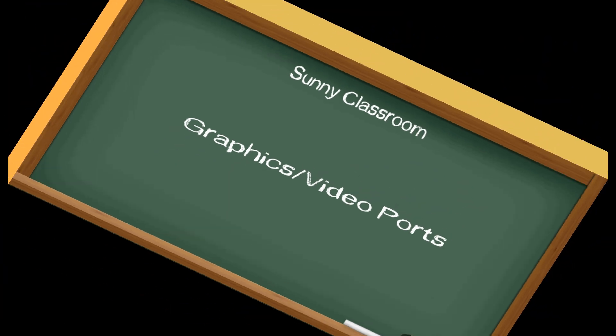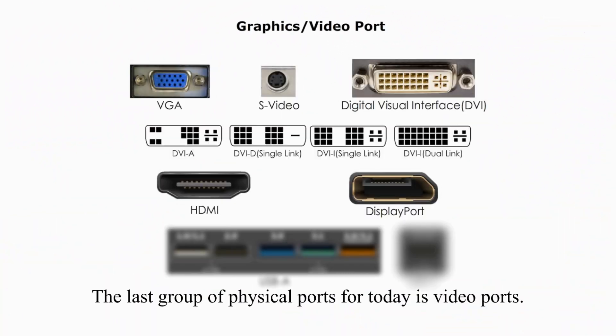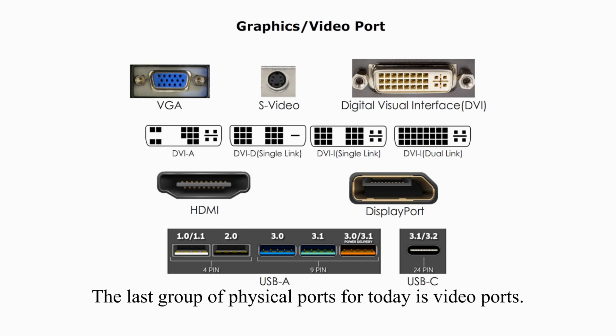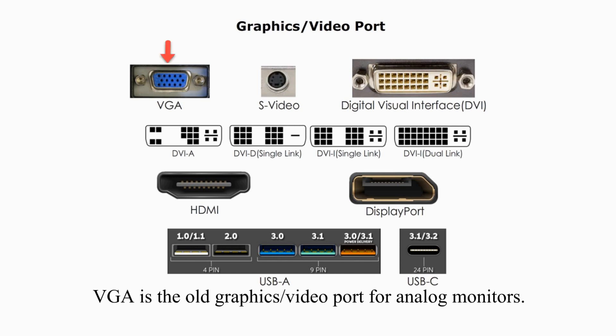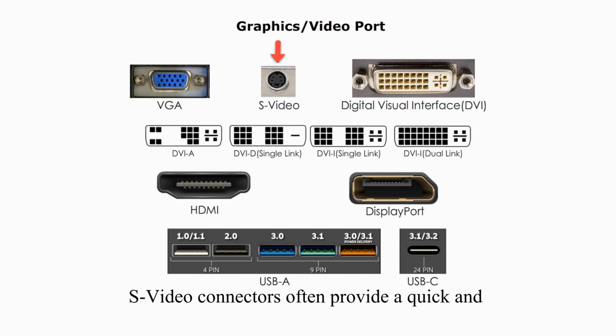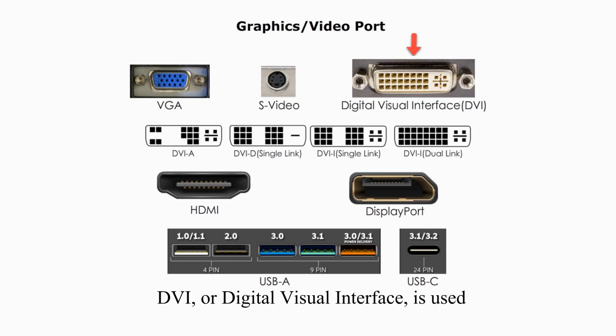Video ports. The last group of physical ports for today is video ports. They are used to connect monitors or TVs. VGA is the old graphics video port for analog monitors. S-video connectors often provide a quick and easy way to connect audio-visual components.